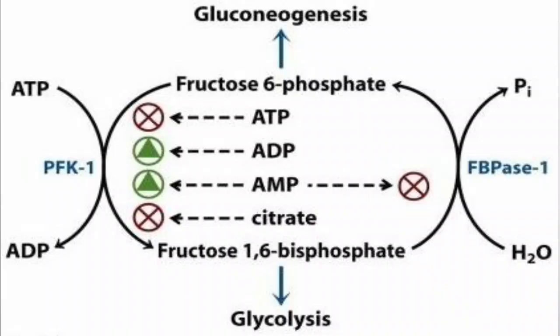The first allosteric activator is AMP — adenosine monophosphate. Whenever the cell has a decrease in the ATP-to-AMP ratio, meaning AMP is increased, AMP binds to the allosteric activator site on PFK1 and increases its activity. This increases the rate of glycolysis, causing more glucose to be oxidized into pyruvate and further into acetyl-CoA or lactate depending on oxygen availability, thereby raising ATP levels in the cell.